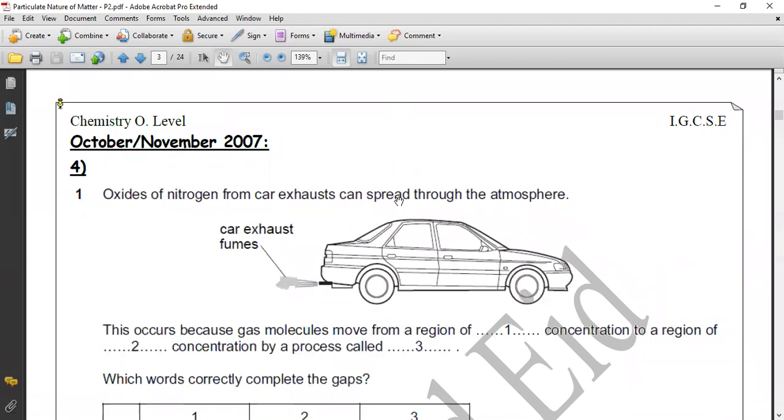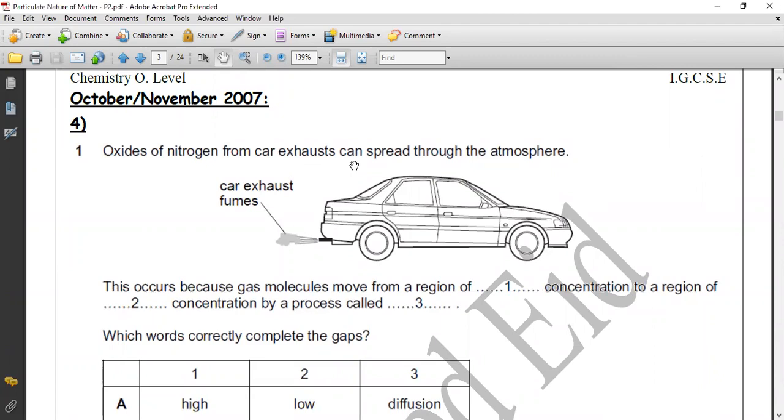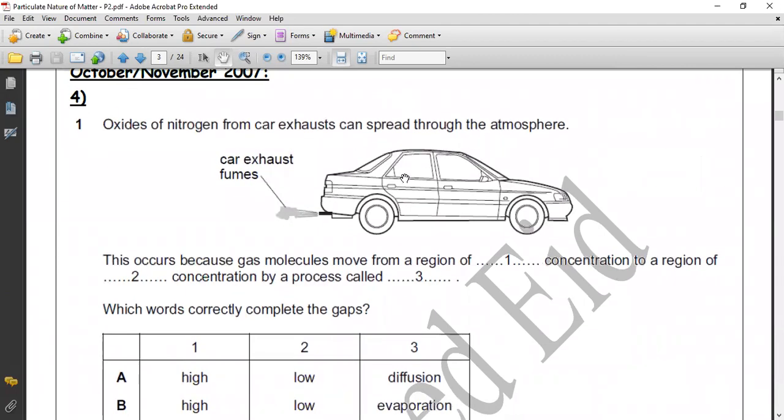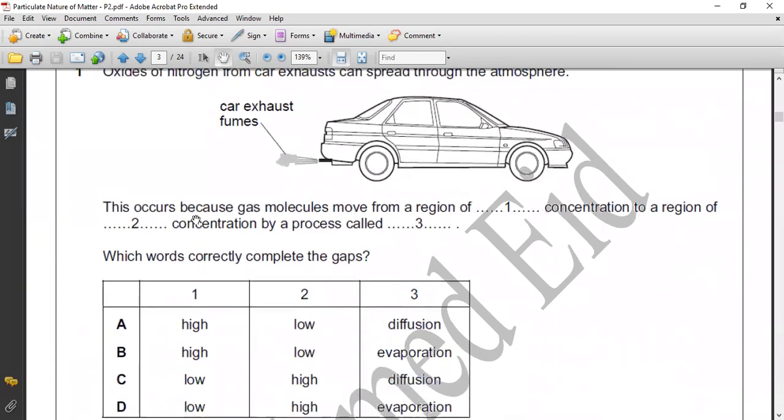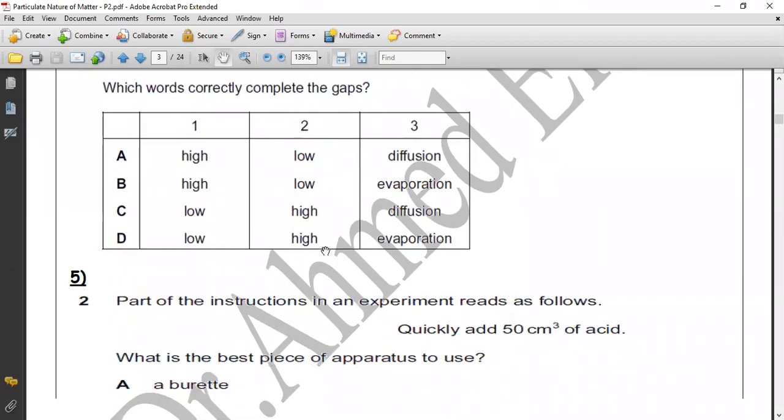Question four. Oxides of nitrogen from car exhaust can spread through the atmosphere. This occurs because molecules move from a region of [space] concentration to a region of [space] concentration by a process called [space]. Process called diffusion - movement of particles is a process called diffusion. And in diffusion, particles move from high concentration to low concentration. So the correct answer will be from high to low concentration through diffusion.